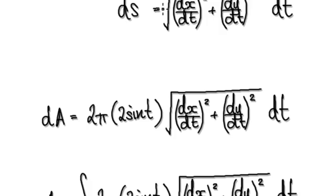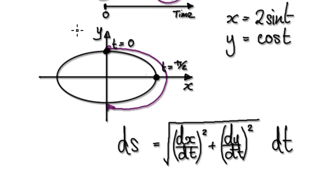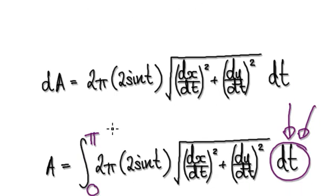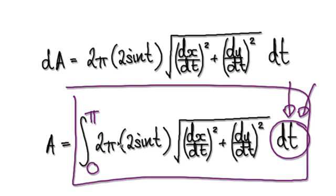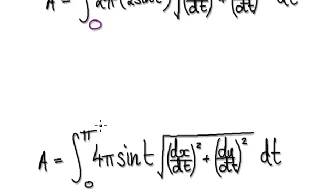When you sum up all the areas, remember it is time that's driving everything, so you're integrating with respect to t from zero to pi. That time period means the particle travels from here all the way to here. So in order to work out the surface area, we need to evaluate this integral from zero to pi. This is actually quite hard to integrate, and I will continue in the next video.